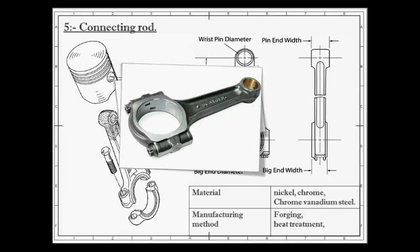The connecting rods are made of nickel, chrome and chrome vanadium steels. For small engines, the material may be aluminum. Connecting rods are manufactured by using forging technique and after that heat treatment.